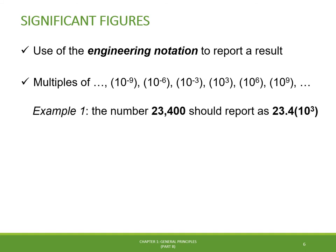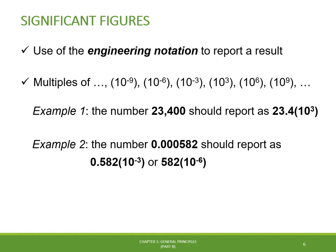For example, if we want to represent the number 23,400 — which has three significant figures located at the beginning — using engineering notation with the same three significant figures, we write it as 23.4 times 10 to the power 3. For the second example, if we want to represent a number with three significant figures located at the end, we report it as 0.582 times 10 to the power minus 3, or simply 582 times 10 to the power minus 6.